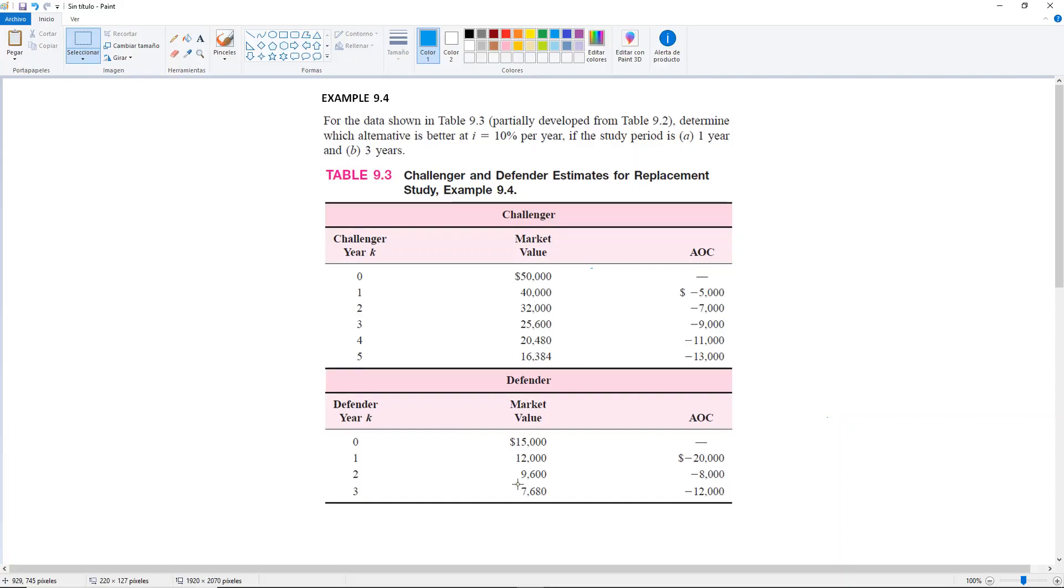Example 9.4. For the data shown in table 9.3, this one, determine which alternative is better at I equal 10% per year if the study period is A, one year,